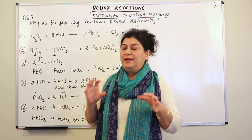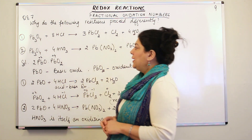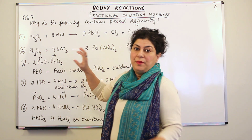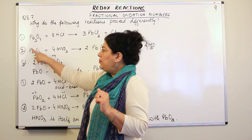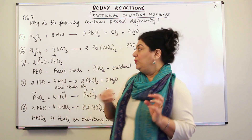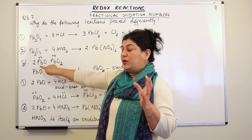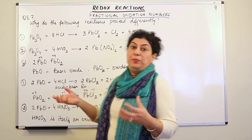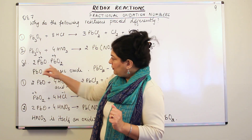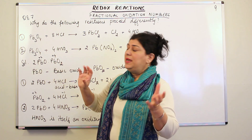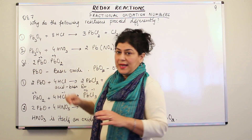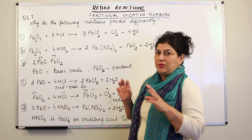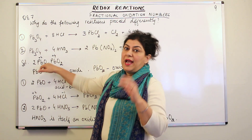Let us explain why they react differently. Pb3O4 is a mixture of two oxides: PbO and PbO2. In one unit of Pb3O4, in the normal ratio, you have two molecules of PbO and one molecule of PbO2. That is how it would normally be present, since it is a metal and non-metal compound and could be ionic in nature. So for every one Pb3O4, there are two PbOs and one PbO2.